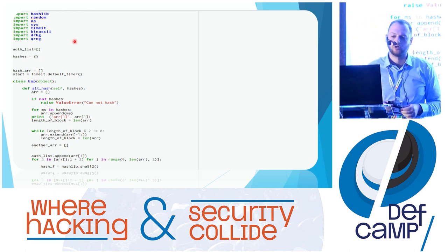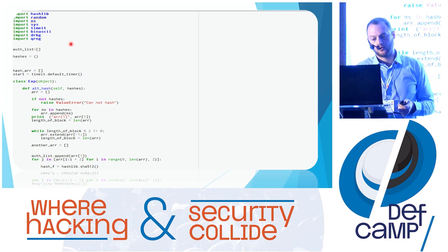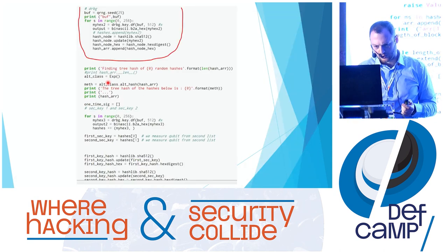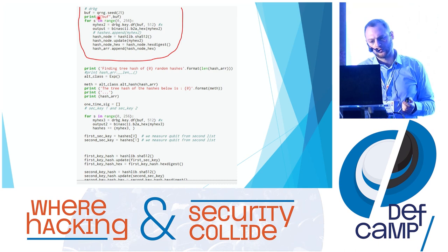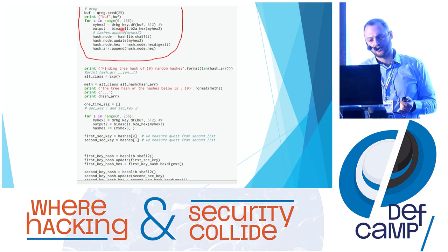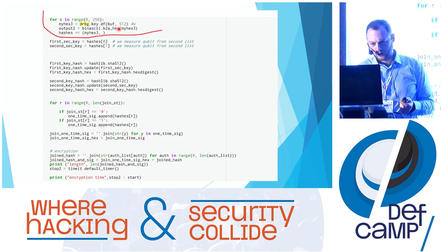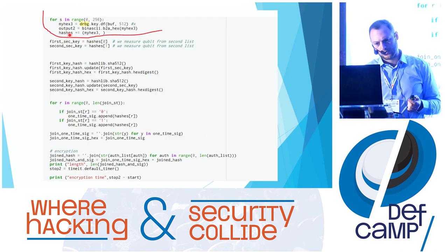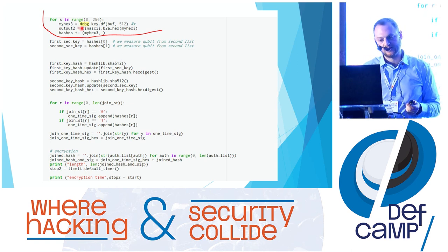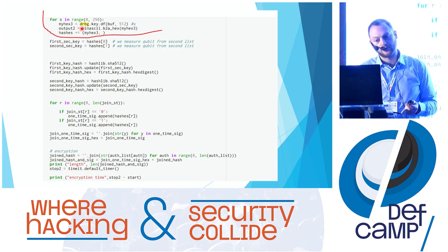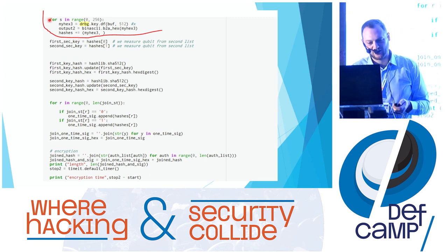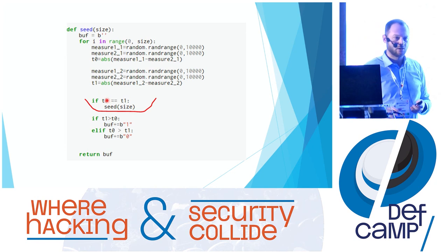We made an implementation of it in Python. Separately we made the implementation of the DRBG and the quantum random number generator. Here we are importing them. As you can see, we are getting the seed from the quantum random number generator and afterwards passing it to our DRBG. That was the key generation phase. In the signing phase, using the same seed of the DRBG we generate the same signature keys. We use a tuple here and afterwards delete it immediately.